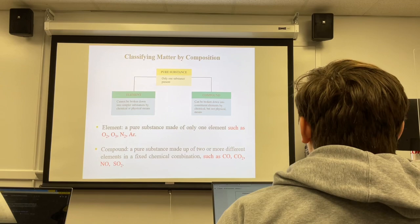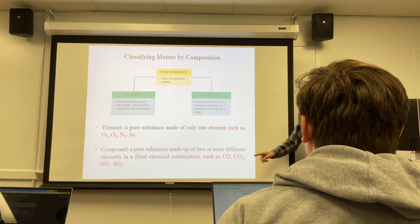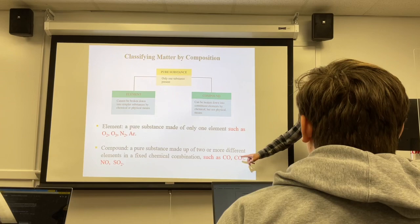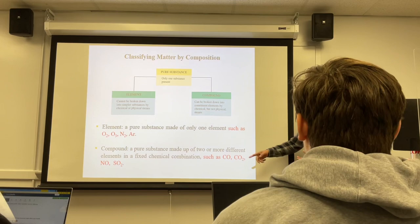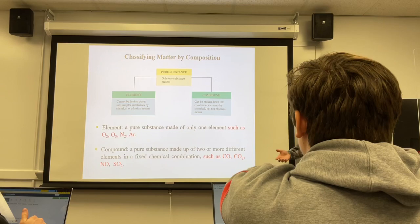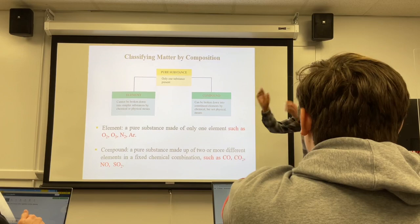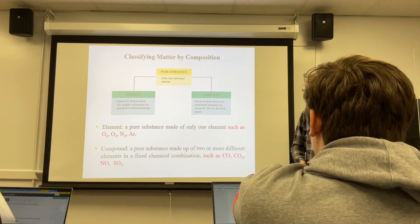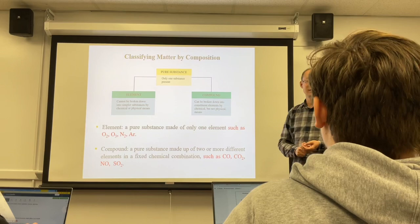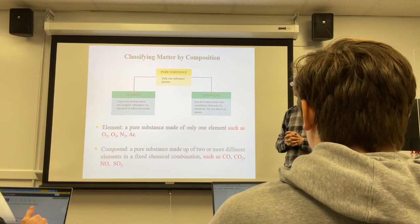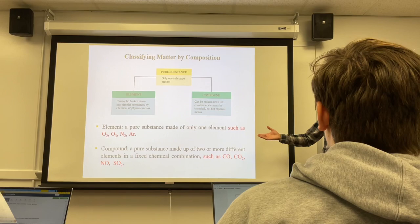Carbon dioxide is also made of carbon and oxygen, but in a 1:2 fixed combination — that's the difference. That's what we call a fixed chemical combination. One single compound will have a fixed combination; if you change that, it becomes a different compound. Nitrogen monoxide and sulfur dioxide are also compounds — two or more different elements in a fixed combination.